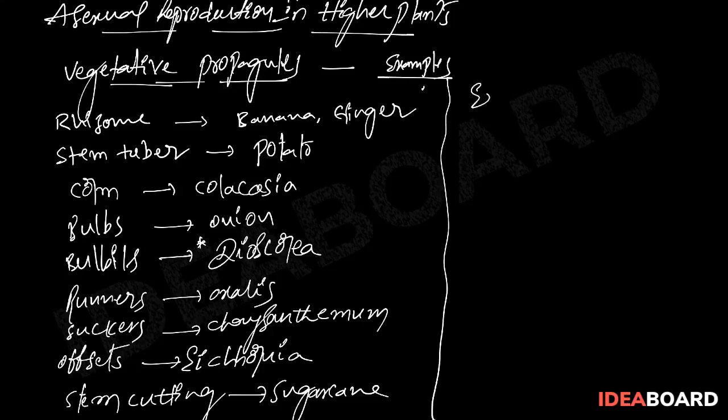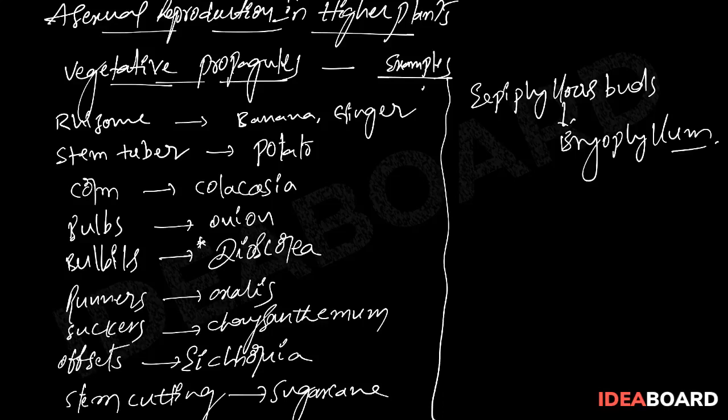Epiphyllous buds, epiphyllous buds, epiphyllous buds, bryophyllum. Adventitious buds arise from the notches present at the margins of leaves of bryophyllum form new plants. This is only we can call it as like epiphyllous buds.